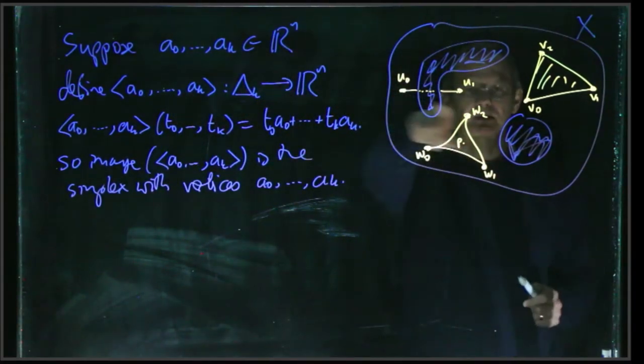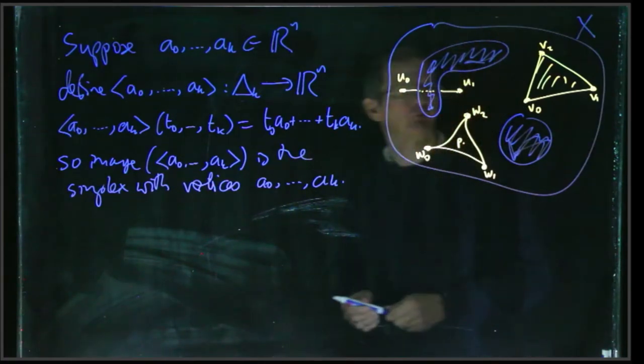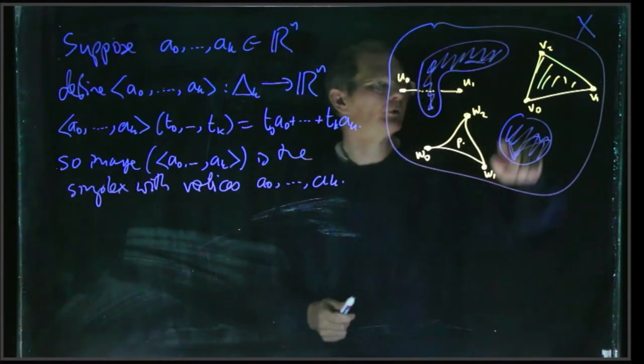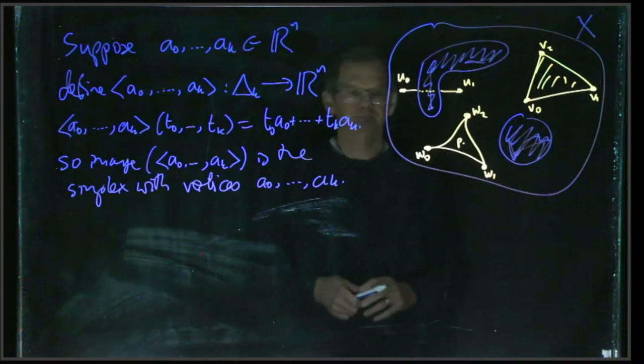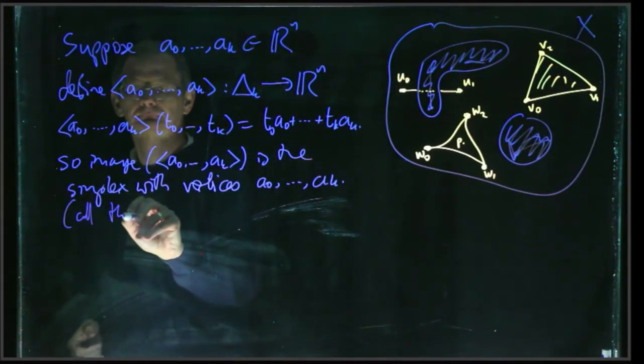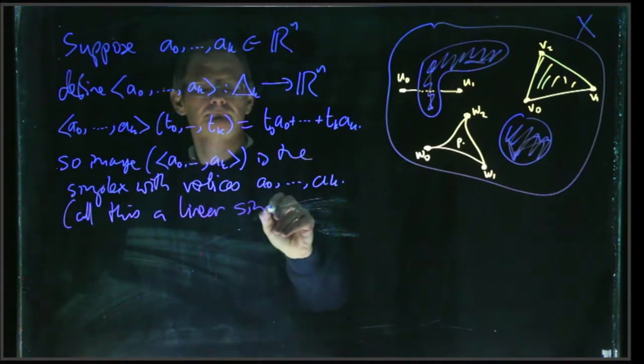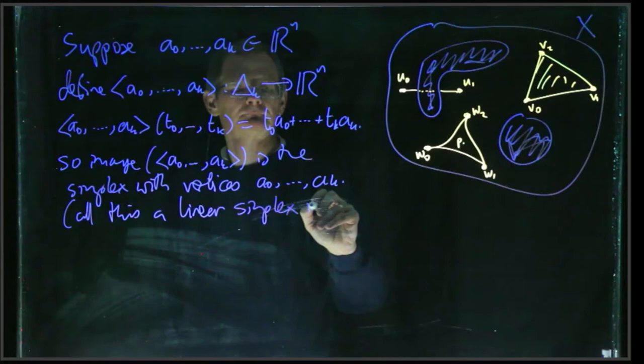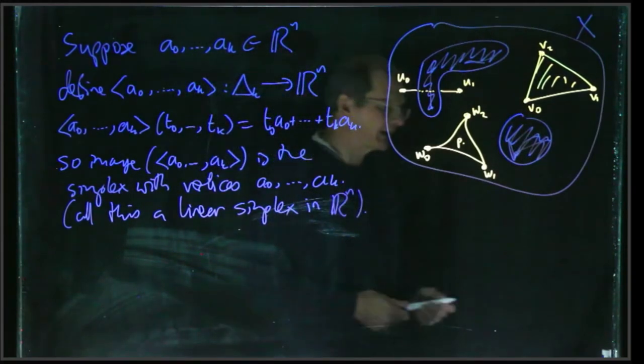So in this picture over here, if we do ⟨u₀, u₁⟩, the image of that is just this line segment. If we do ⟨v₀, v₁, v₂⟩, the image of that is this triangle here. Okay, so that's a linear simplex in ℝⁿ.